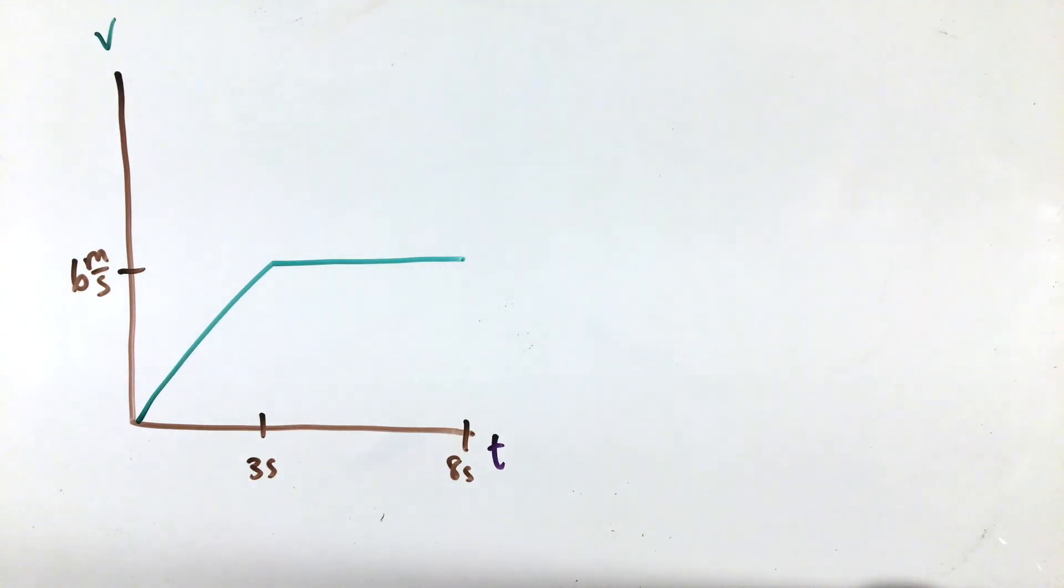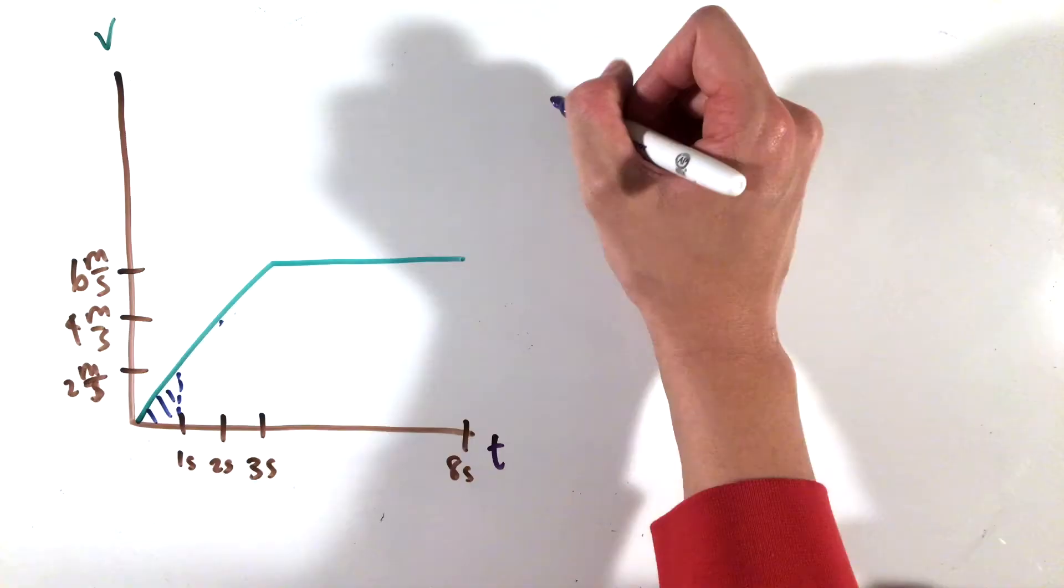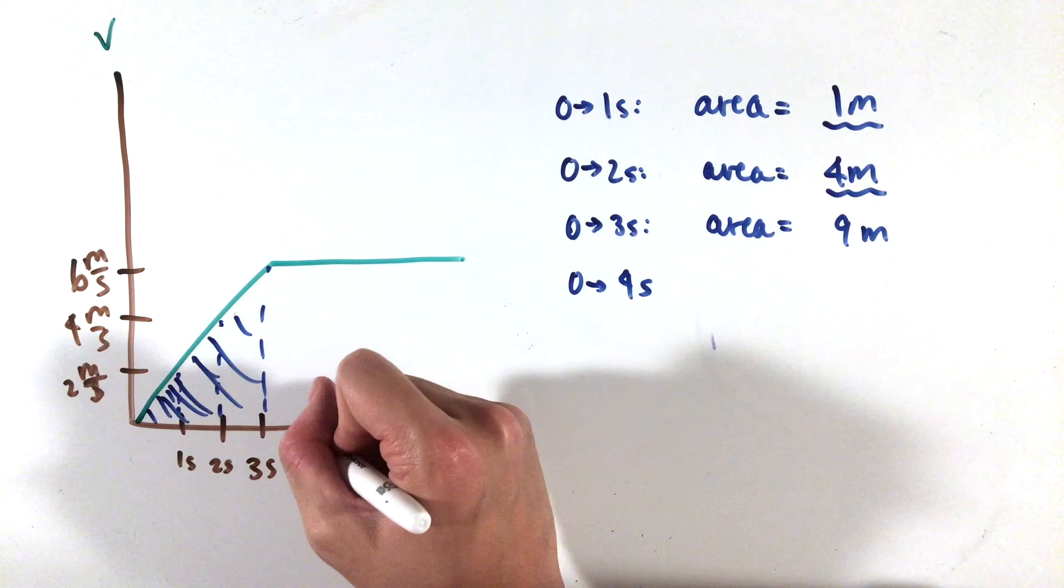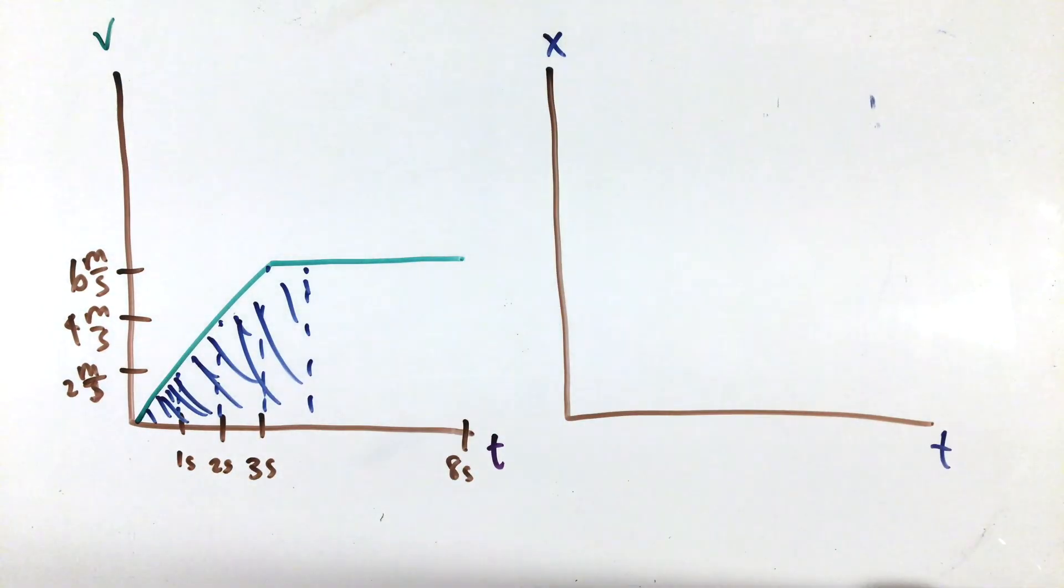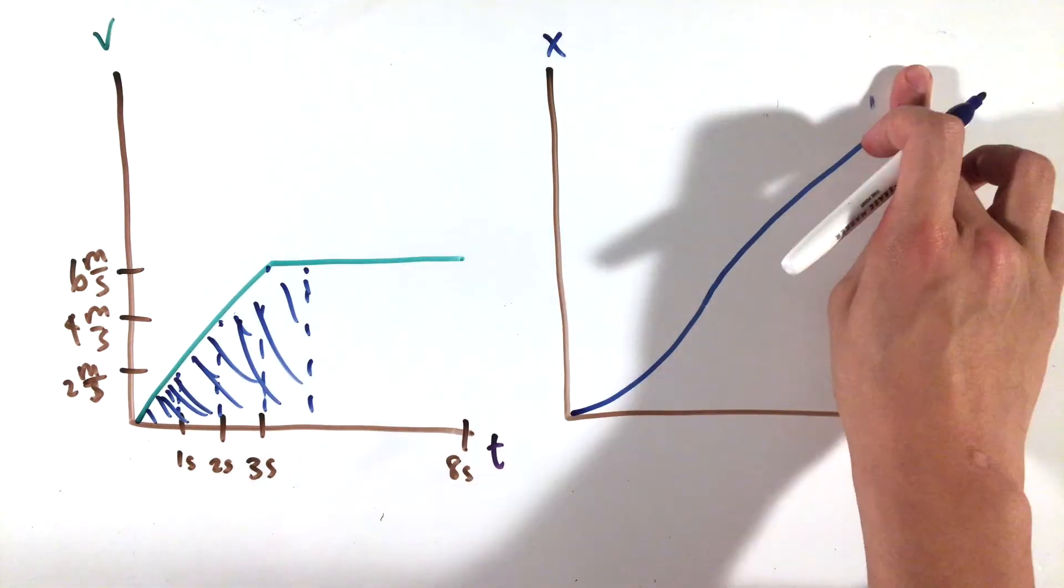We can find the position versus time graph in a very similar manner using the area enclosed under the velocity graph. By plotting a few points and calculating the areas under either the triangle from 0 to 3 seconds or the rectangles from 3 to 8 seconds, we can arrive at our position versus time graphs as shown here.